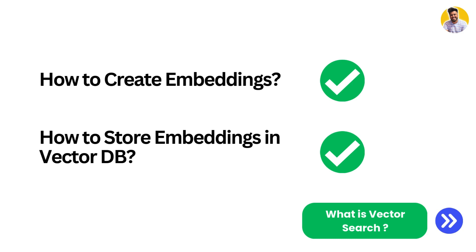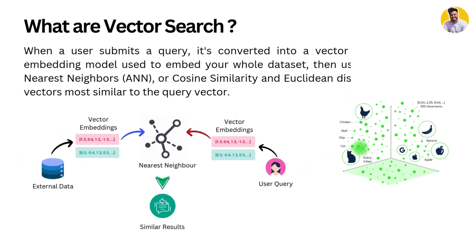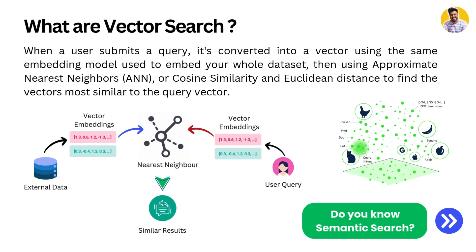Now let's learn how to search vector databases. Vector search works by converting a user query into a vector using the same embedding model used to embed the whole dataset. We use algorithms like Approximate Nearest Neighbors (ANN), cosine similarity, Euclidean distance, or L2 distance to find similar vectors to the query vector.